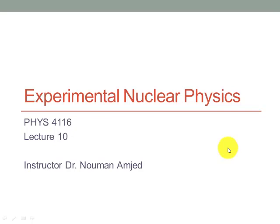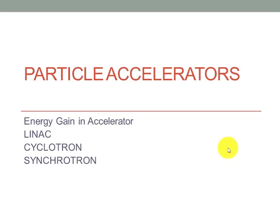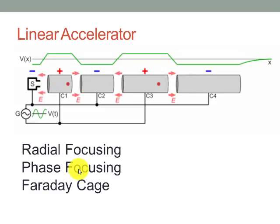Assalamu alaikum, dear students. Welcome to the 10th lecture of the course Experimental Nuclear Physics. In the last lecture we were studying the particle accelerator. This lecture is the continuation of our previous lecture, and in this lecture we shall study the energy gain in different kinds of accelerators: in the linear accelerator, in the cyclotron, and I will also explain how the cyclotron was limited and the synchrotron was introduced for particle acceleration.